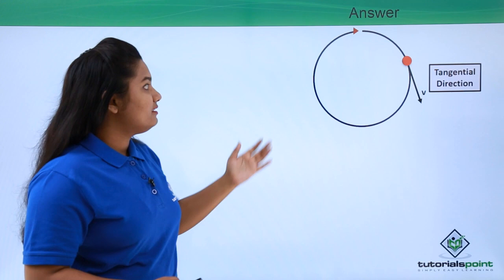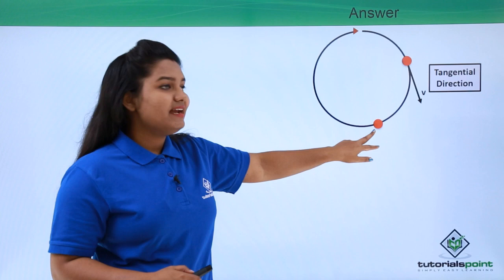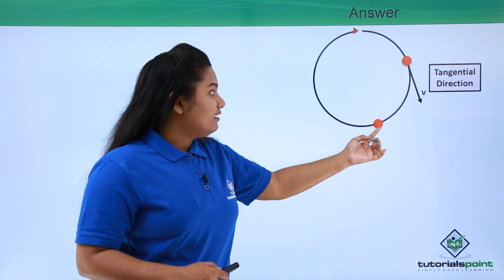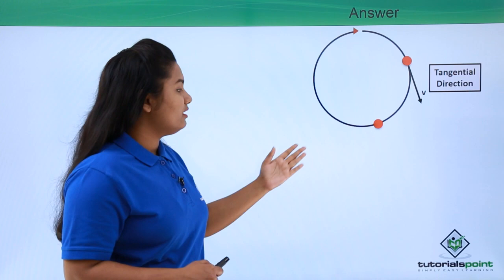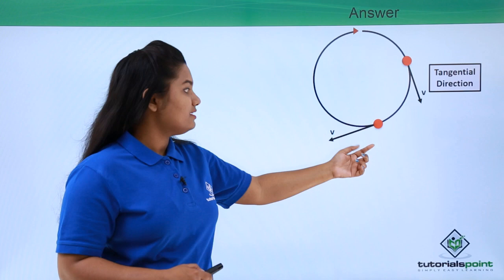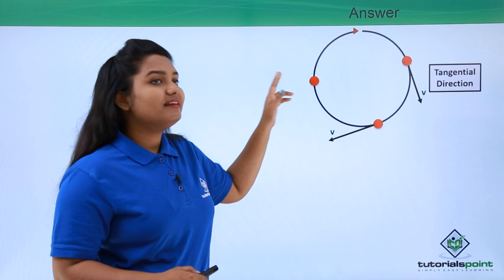In the same way, if the stone is located at another point on the circle at a certain instant of time, then the direction of motion and velocity of the stone at that point will be along the tangent at that point. Similarly, if the stone is at yet another position, its direction of velocity and motion will again be along the tangent at that point.